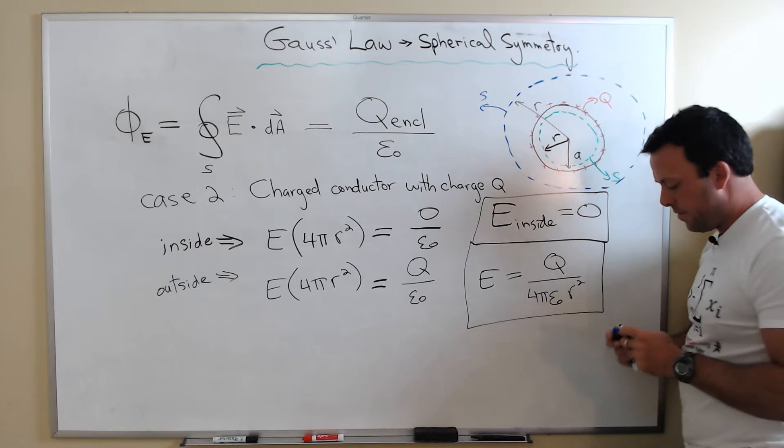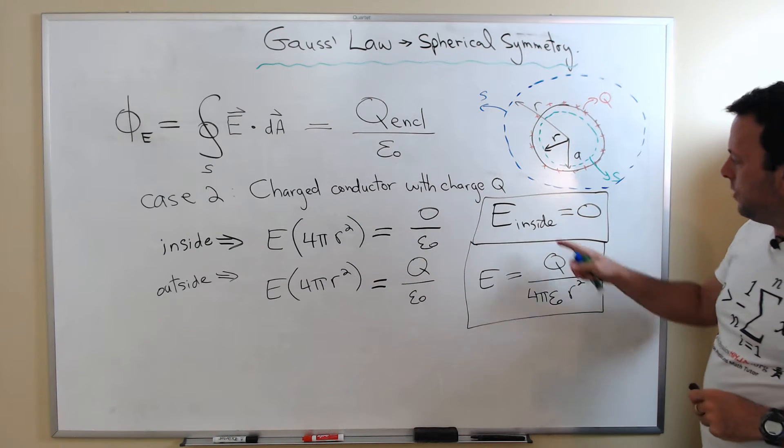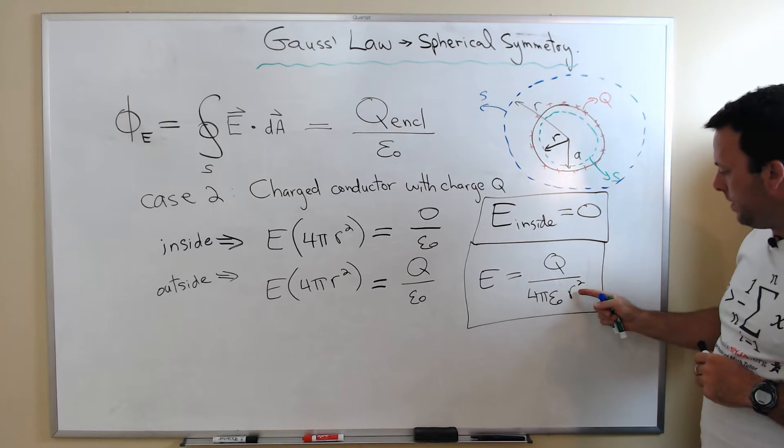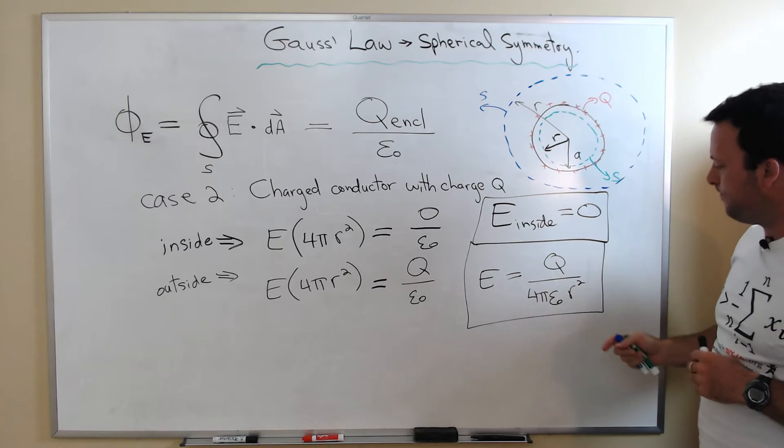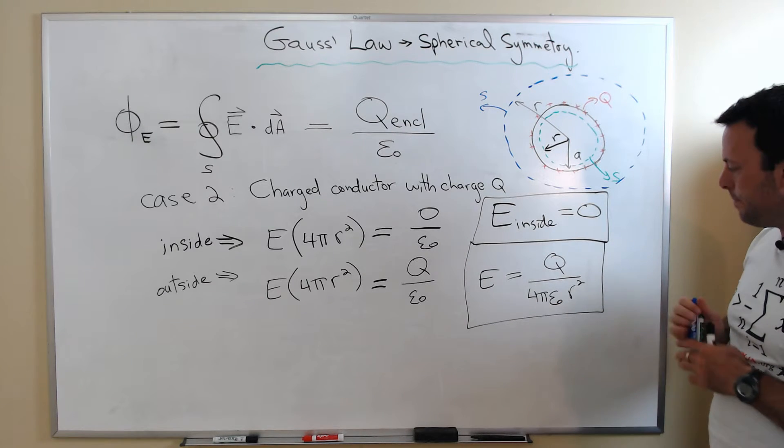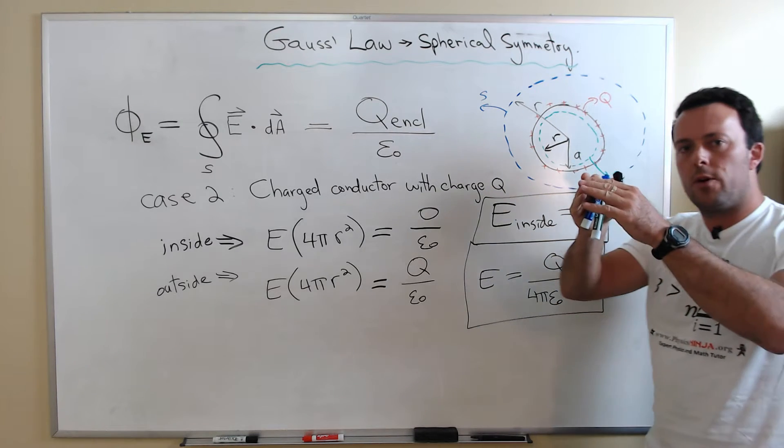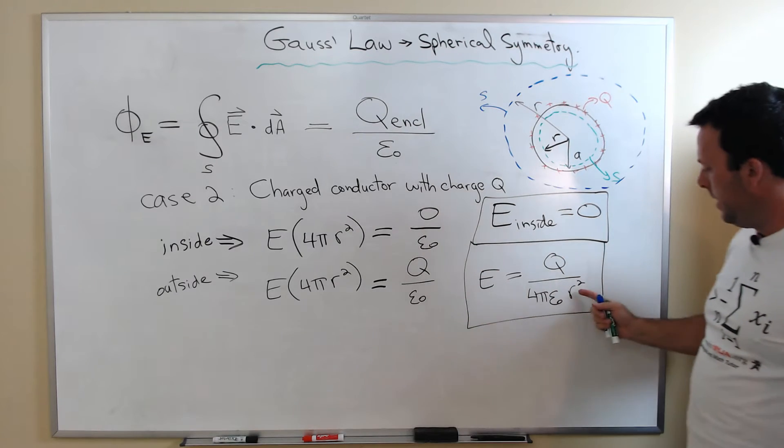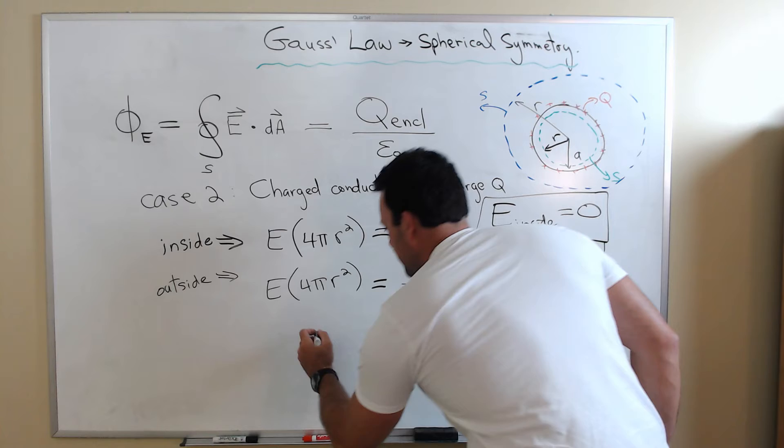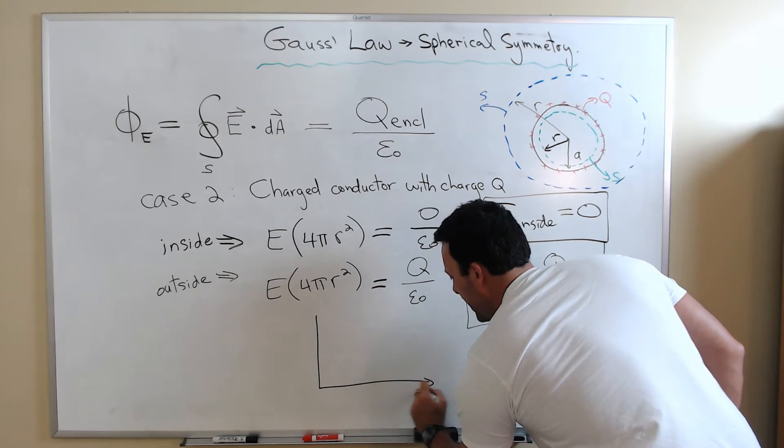It's kind of a remarkable result. So the field inside the conductor is zero. The field at the surface of the conductor is Q divided by 4 pi epsilon times A. And as you go farther away from the surface of the conductor, it drops off as 1 over R squared.